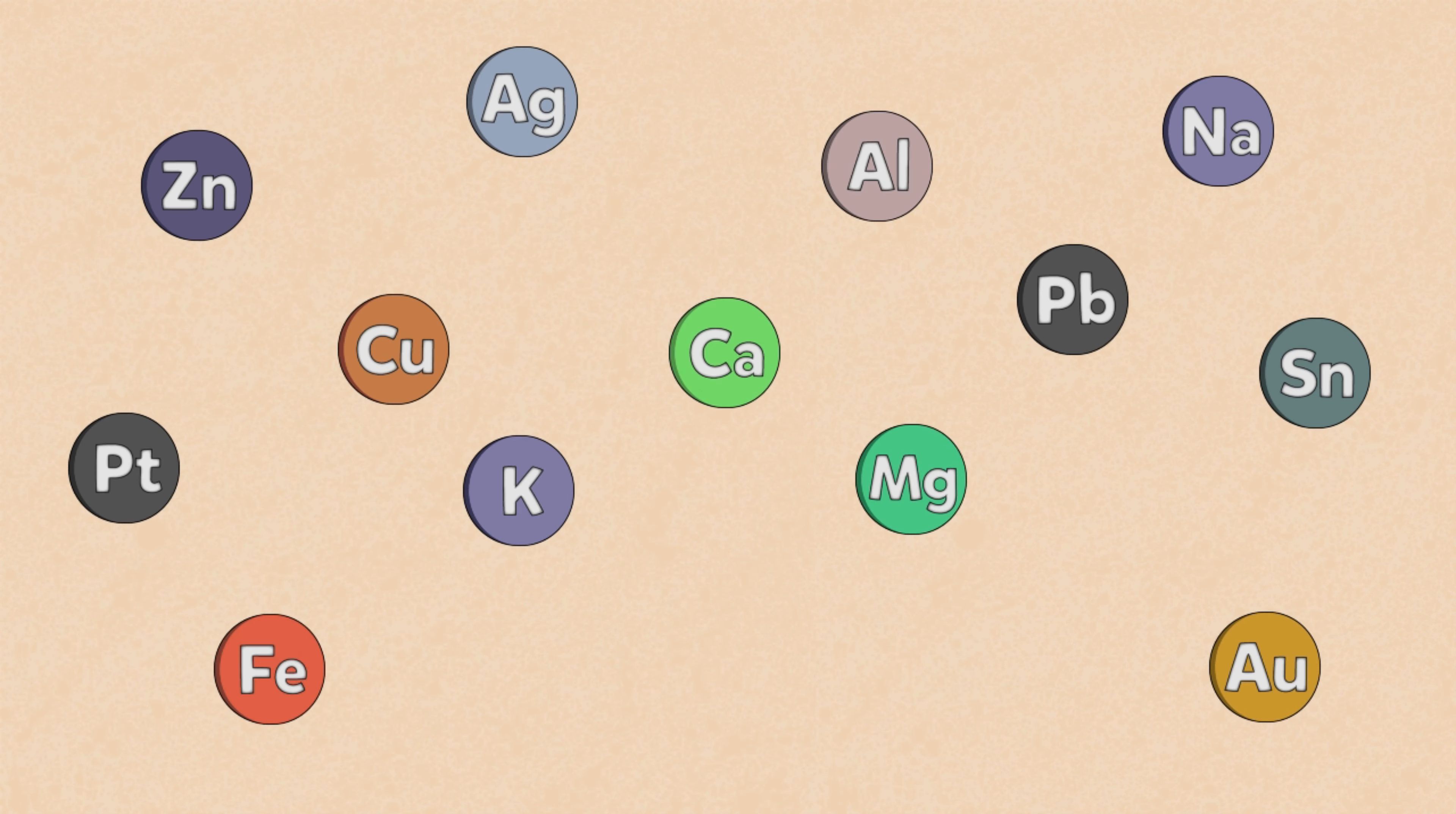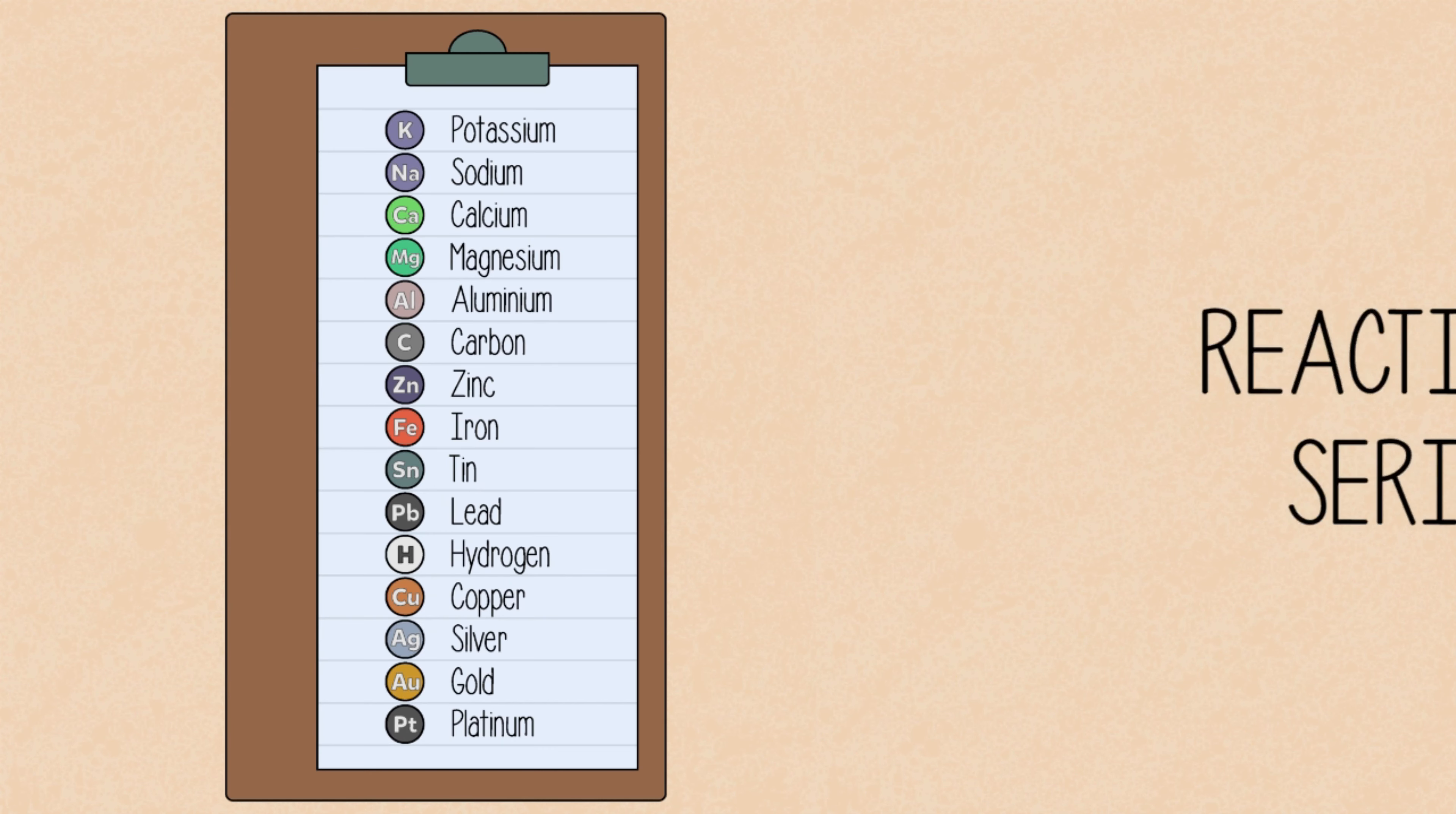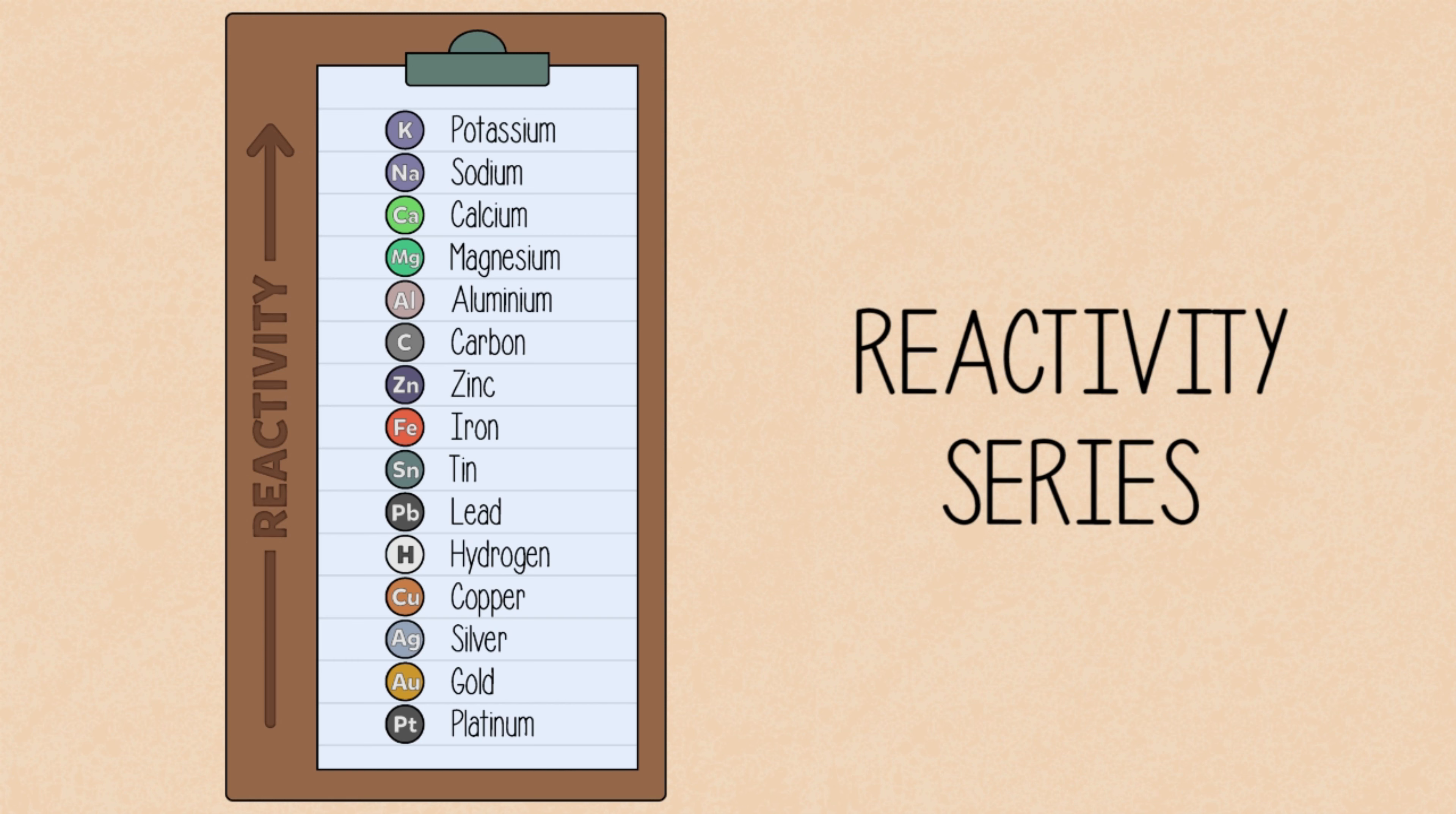We can actually organize these metals according to their reactivity. This arrangement is known as the reactivity series. The most reactive metals are at the top, and the least reactive at the bottom.